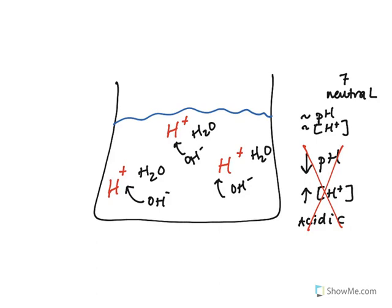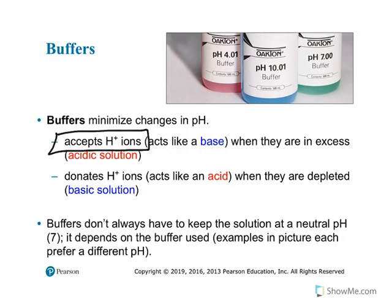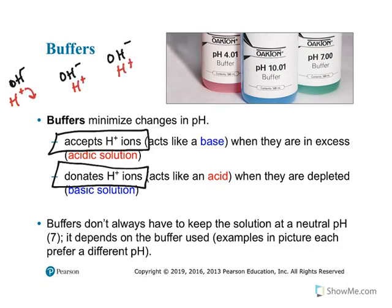maintained that range. Buffers can also donate hydrogen ions in the same way. So let's say there are very low hydrogen ion concentrations - they can act like an acid and donate hydrogen ions to also change the pH range to the desired level.